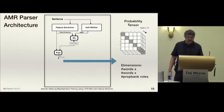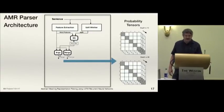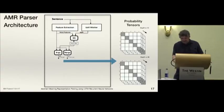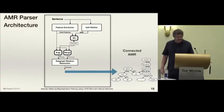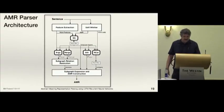Those concepts are used as input to the next neural network, which is the arguments neural network. Uses word features again and produces a probability tensor whose dimensions are words by words by prop bank rules. And we also produce a probability tensor for the non-arguments. Then there's a subgraph relation resolution algorithm that decides which relations should be connected to which concepts. So we have a connected AMR. There's more to AMR than just that. There's also attributes and name categories, for example. So we also have a stage at the end that puts everything together into a final AMR.